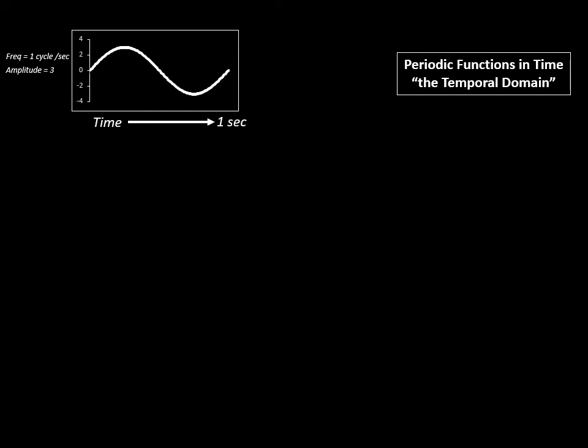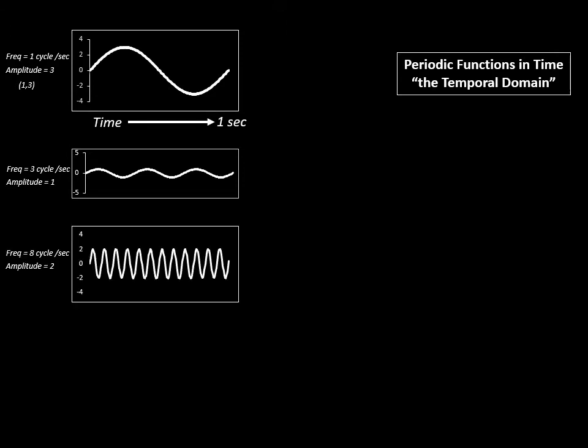We could represent this in textual form or simply as a pair of numbers, a one and a three. Let's look at a couple other waves of different frequencies and different amplitudes. The next one has a frequency of three cycles over one second and it has an amplitude of one. The next wave has a frequency of eight cycles per second and an amplitude of two units.